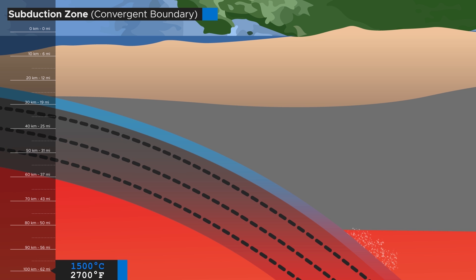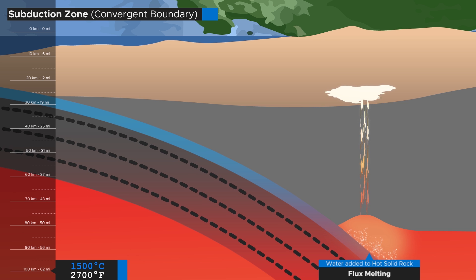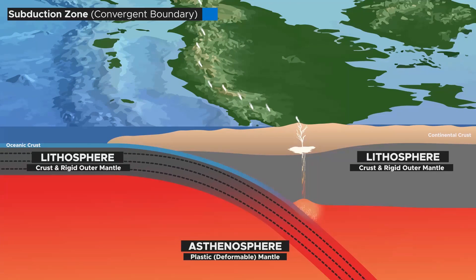At depth of around 100 kilometers or 60 miles, the pressure is great enough that water inclusions trapped inside the rock are freed and released into the overlying mantle, which lowers the melting point of the already hot mantle rocks, resulting in partial melting. This process is called flux melting, and the magma it produces then slowly rises into the crust above and finally to the surface, forming a chain of volcanoes alongside the subduction zone.